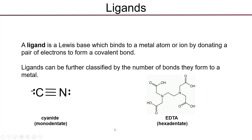Cyanide is what we call a monodentate ligand, while EDTA is called a hexadentate ligand, because ligands are further classified by the number of bonds they form to a metal. A monodentate ligand like cyanide only donates one lone pair to a metal center and forms a single covalent bond. Because of the size of the molecule and its geometry, EDTA, a hexadentate ligand, can actually donate six separate electron pairs to form six new covalent bonds to a metal center.